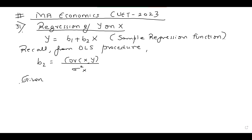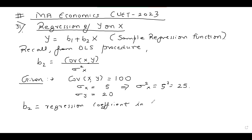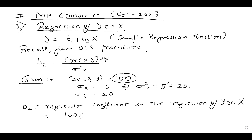What is given in the question? The covariance between X and Y is 100. The standard deviation of X is 5 and standard deviation of Y is 20. When standard deviation of X is 5, the variance is 5² = 25. So B2, the regression coefficient in the regression of Y on X, equals covariance of XY which is 100, divided by variance of X which is 25. The value of B2 is 100/25 = 4. This is the answer.